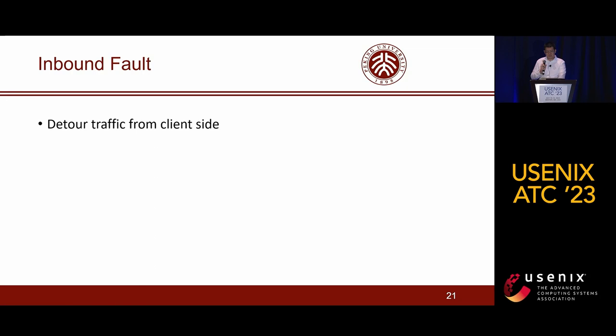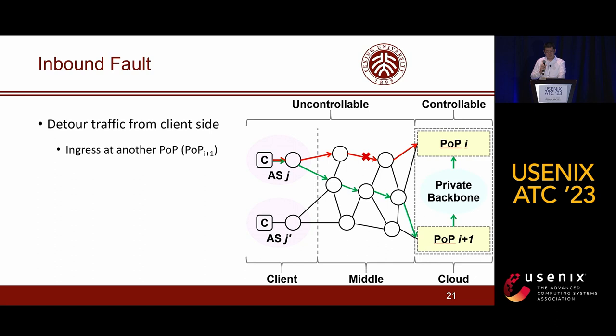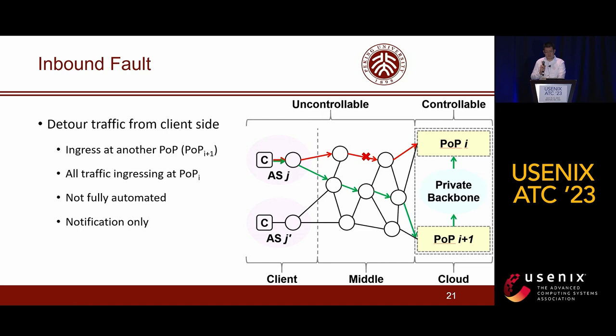To circumvent inbound faults, the detouring subsystem detours victim traffic from the client side. As shown on the slide, the subsystem makes traffic ingress at another POP to circumvent the inbound fault. As the detouring is from the client side, we must detour all traffic ingressing at POPi to ingressing at POPi+1 through announcing BGP routes for the IP prefix of POPi at POPi+1. Due to the large impact of traffic detouring for inbound faults, AutoArcical Appeals currently only notifies network operators of inbound faults and provides an API for the traffic detouring.